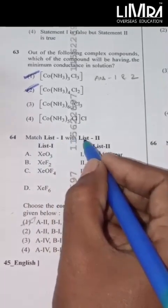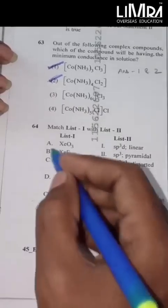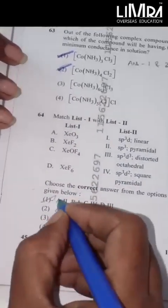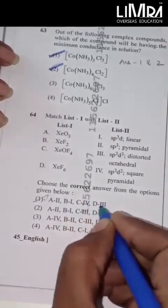Match list 1 with list 2. Choose the correct answer from the options given below. The right answer is A2B1C4D3.